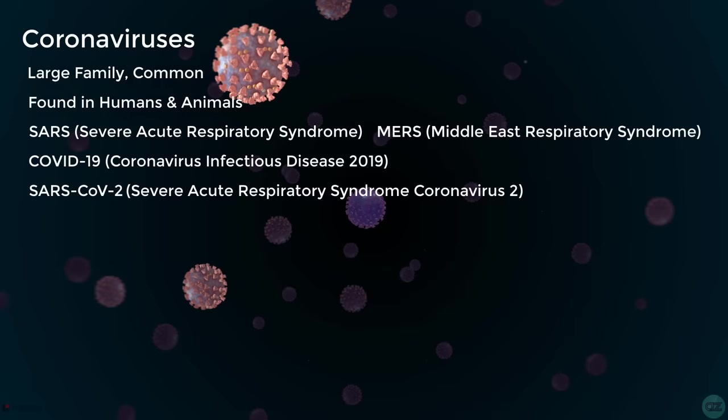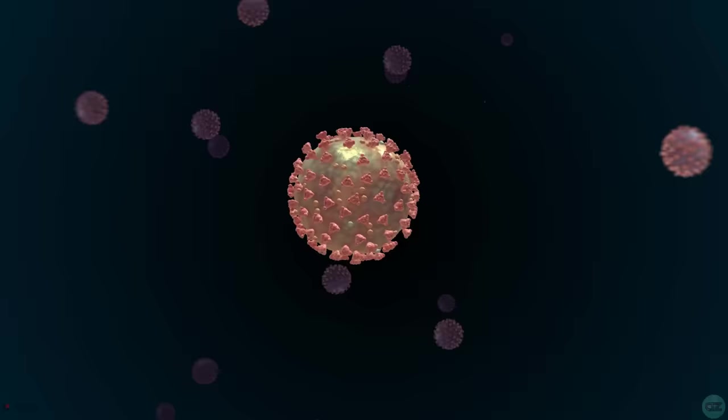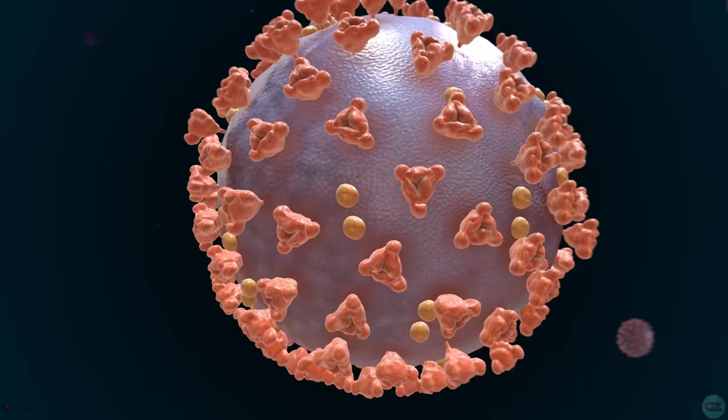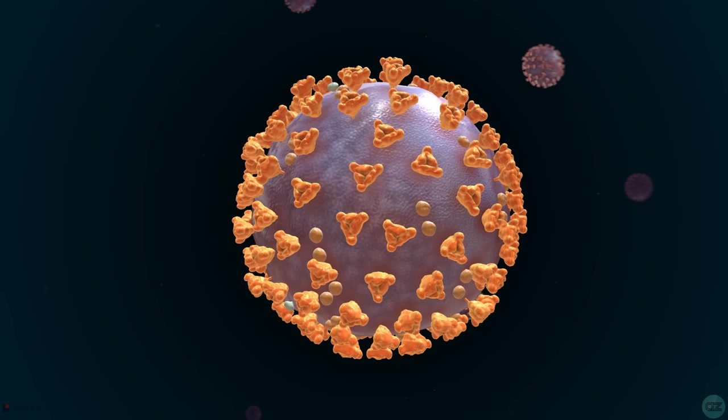Let's now take a look at the structure of the SARS-CoV-2 virus. So looking at this virus, we can see that it has a series of protein spikes on its surface, which when viewed under a microscope, appear like a crown, which gives rise to the name Corona, which is Latin for crown and is therefore common to all the coronaviruses.